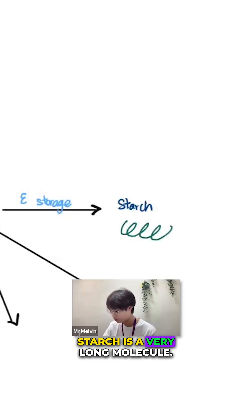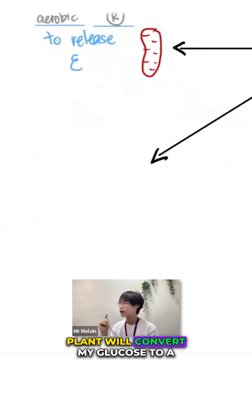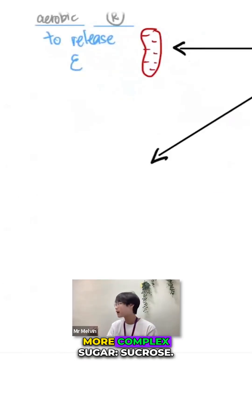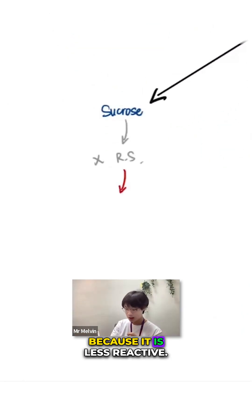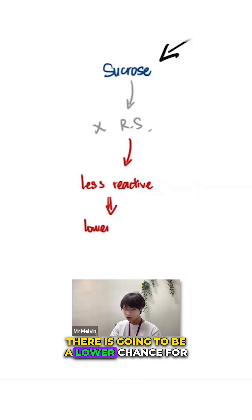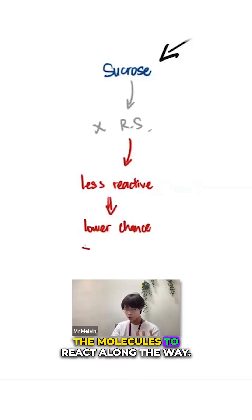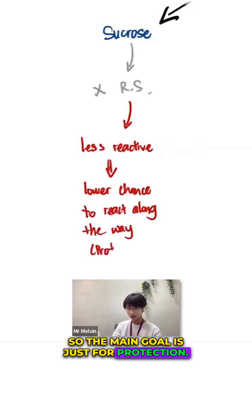Starch is a very long molecule. Plants will convert glucose to a more complex sugar, sucrose. Why? Because it is less reactive. There is going to be a lower chance for the molecules to react along the way. So the main goal is just for protection.